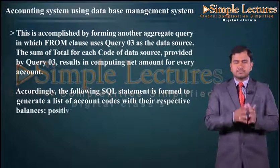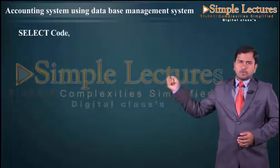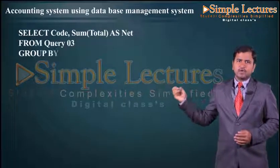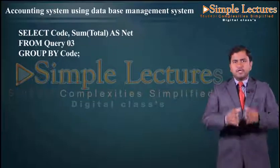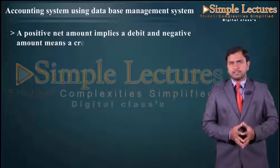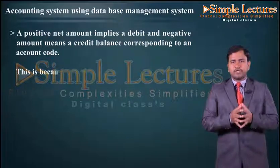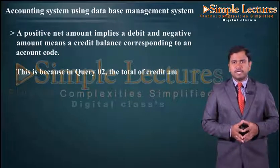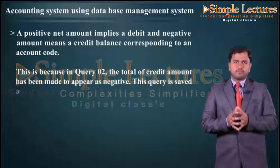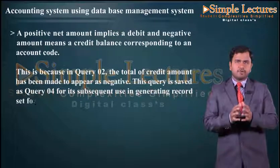The following SQL statement is formed: SELECT code, SUM(total) AS net FROM query03 GROUP BY code. A positive net amount implies a debit balance and a negative amount means a credit balance for the corresponding account code. This is because in Query 02 the total of credit amount was made negative. This query is saved as Query 04 for subsequent use in generating the trial balance record set.